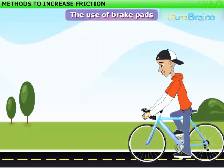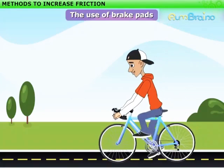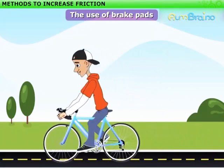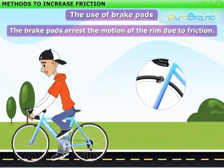The use of brake pads. We deliberately increase friction between tires and brake pads in the brake system of bicycles and automobiles. While riding, the brake pads do not touch the wheels, but when the brake lever is pressed, the motion of the rim is arrested due to friction. This helps in stopping a moving vehicle.